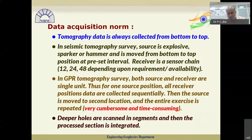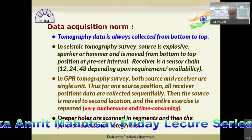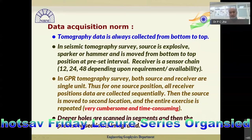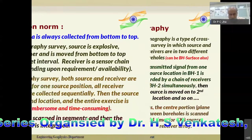We can do tomography using both seismic and GPR. In GPR tomography, we don't have a receiver chain — we have a single-channel receiver, so both source and receiver are single units. For one source position, all receiver position data are collected sequentially, then the source moves to the next location and the entire exercise is repeated. This is very cumbersome and time-consuming: for one fixed source position, we move the receiver to eight locations, finish, then move the source to the next position.